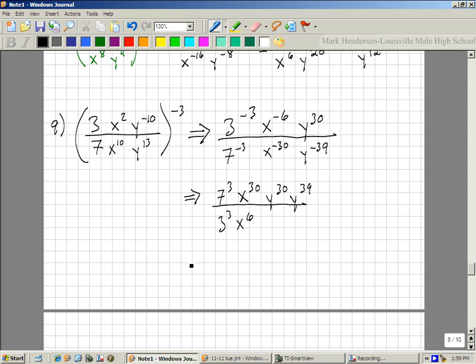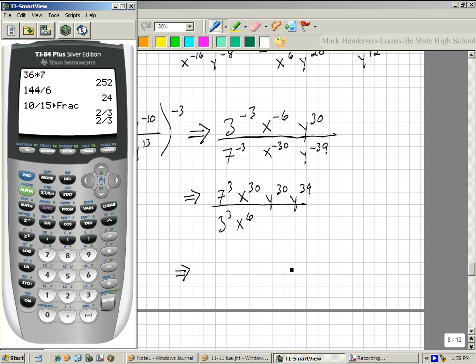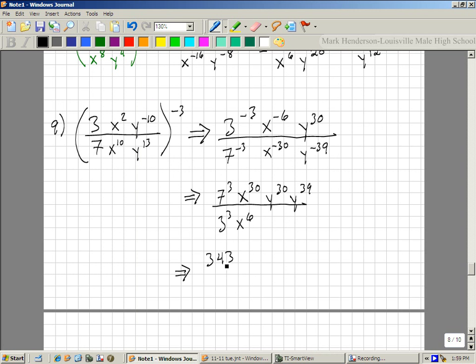So, now I just have to reduce. 7 to the third power, how much is that? Alright, so here's how you do it. 7 to the third power is 343 over, how much is 3 to the third power? 27. We've done that a couple times the last couple days, so hopefully you knew that one. 24 more x's on top than there is on the bottom. All of the y's are on top, so we just combine those together like this, y to the 69.